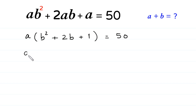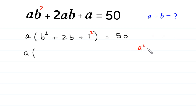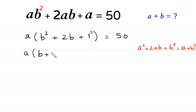Next, we look at the expression inside the bracket: b² + 2b + 1. We can consider the 1 as 1², and according to the algebraic identity a² + 2ab + b² = (a + b)², we can rewrite b² + 2b + 1 as (b + 1)². So we have a(b + 1)² = 50.